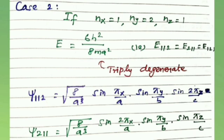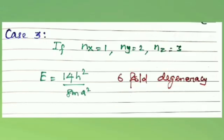Case number three: if nₓ = 1, nᵧ = 2, n_z = 3 — all three values are different. In this condition, there are six different permutations giving the same energy, resulting in six-fold degeneracy. The energy in this condition equals 14h²/8ma².